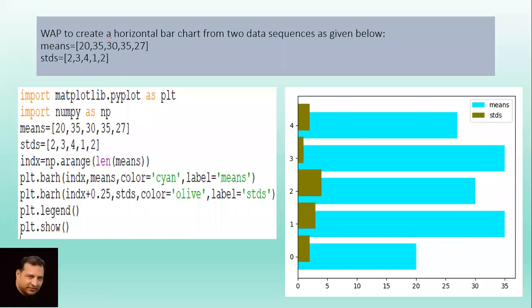Next, second example. Write a program to create a horizontal bar chart from two data sequences. Data sequences used are means and stds (standard deviations). Some random values are given in the question. Import lines for importing libraries, then means and standard deviations. Index equals np.arange(len(means)). plt.barh - h stands for horizontal, because we have to create a horizontal bar according to the question.